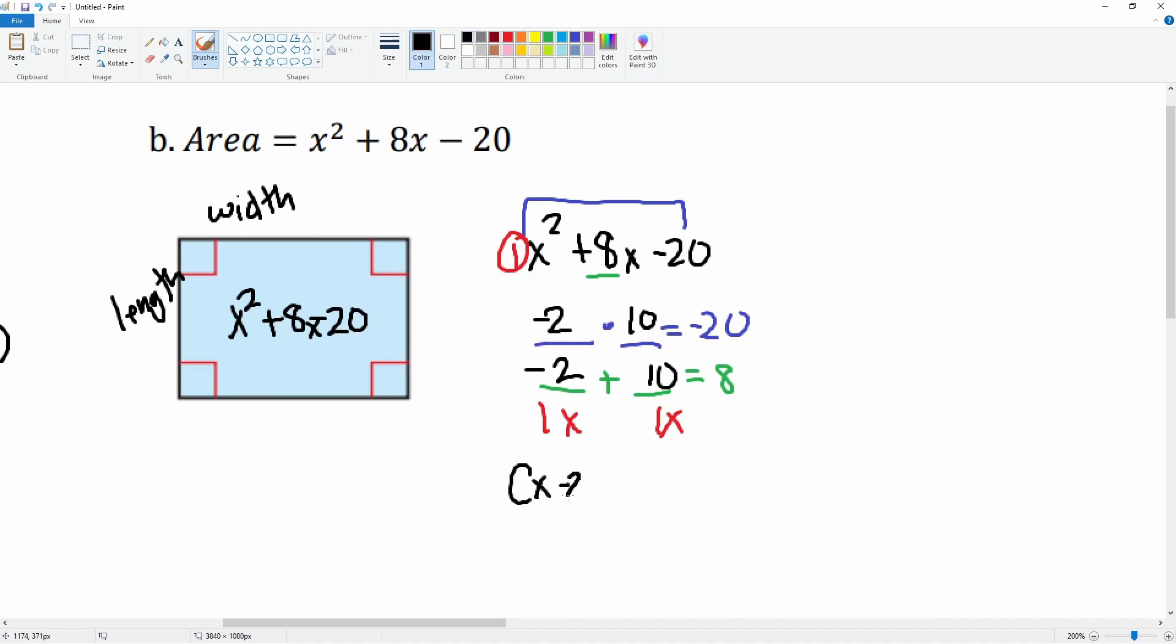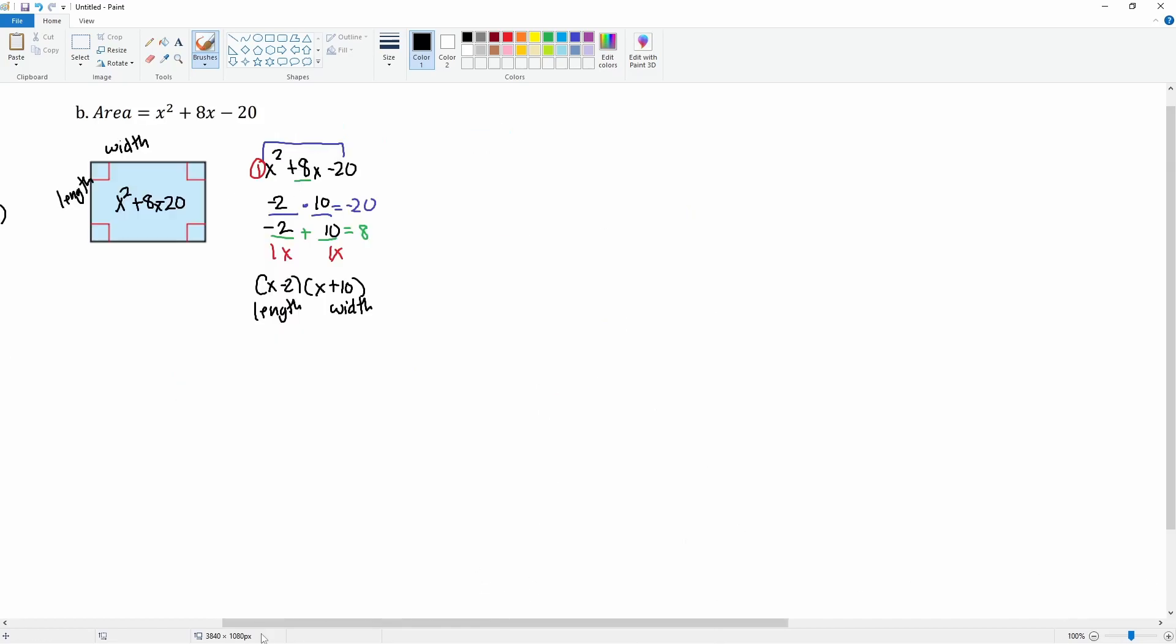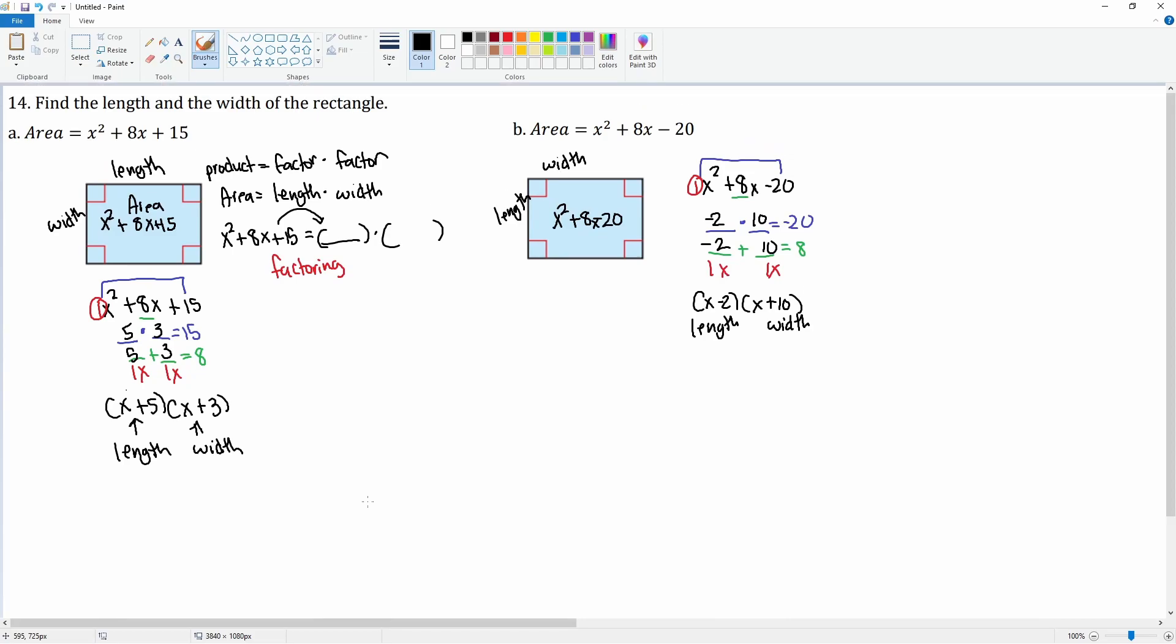This can be seen as the length and this can be seen as the width. So there you go—that is how you find the length and the width given the area as a quadratic.